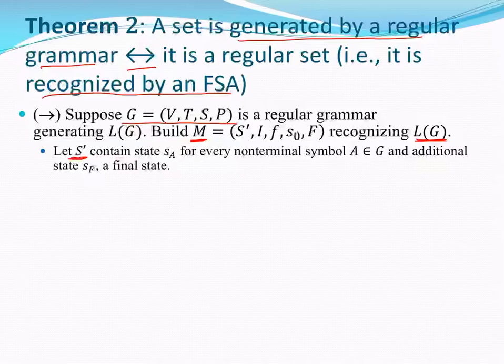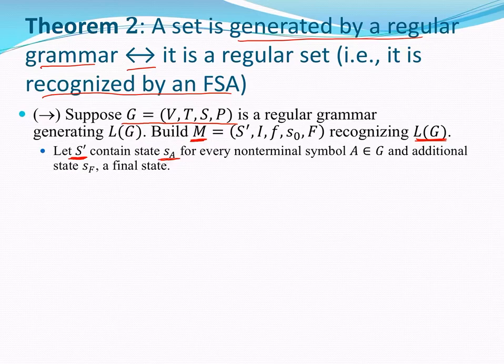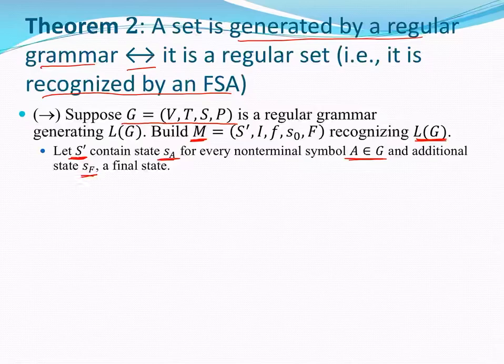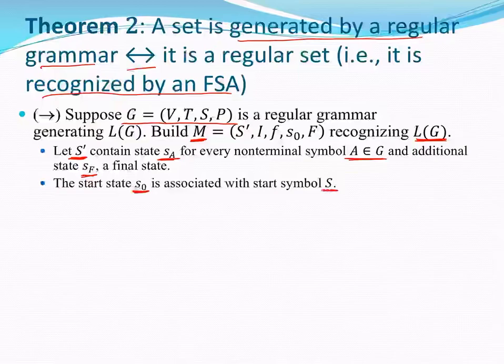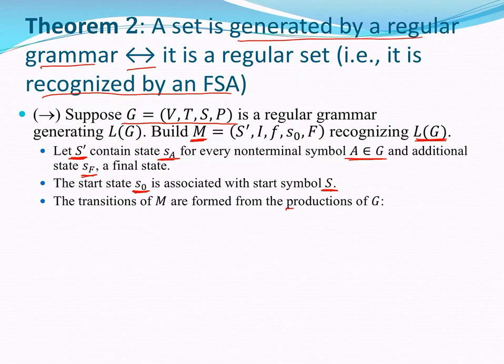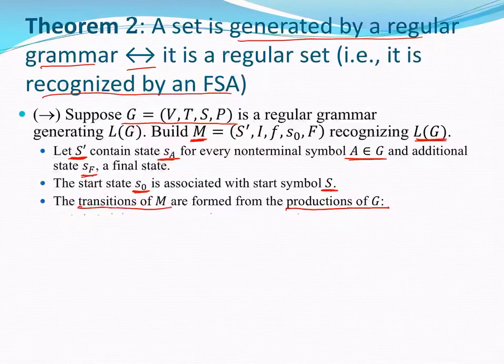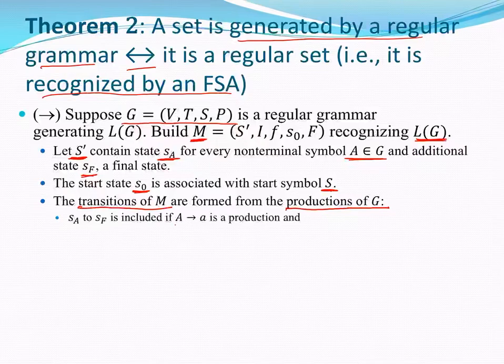What states will it contain? It will contain a state for every non-terminal symbol in my grammar, and I'm going to have one additional state called SF, a final state, assuming that F isn't one of my non-terminal symbols. I'm going to associate the traditional starting state for my machine with the start symbol S.